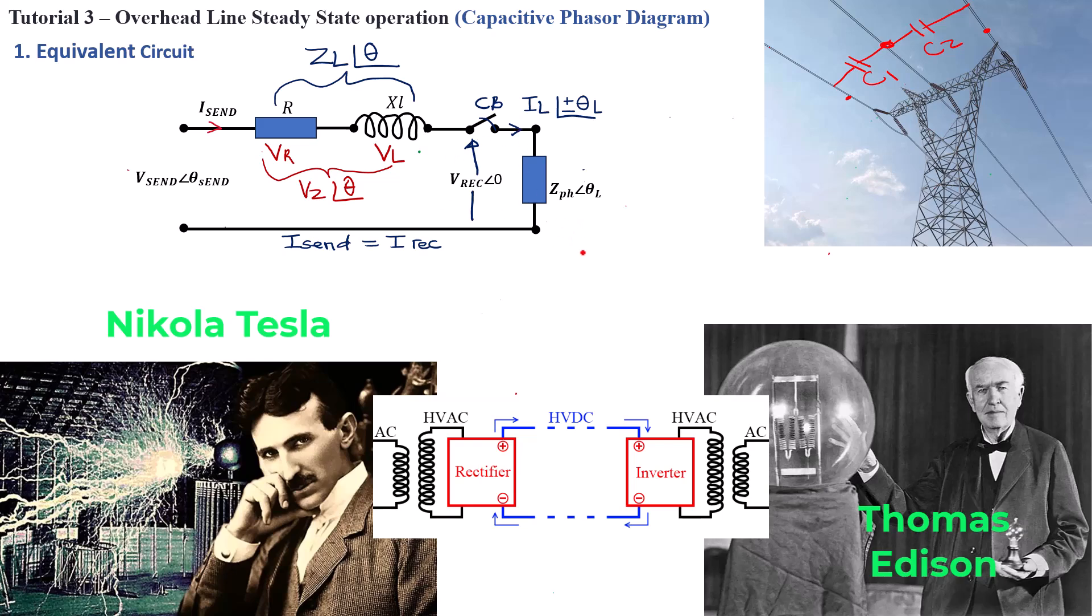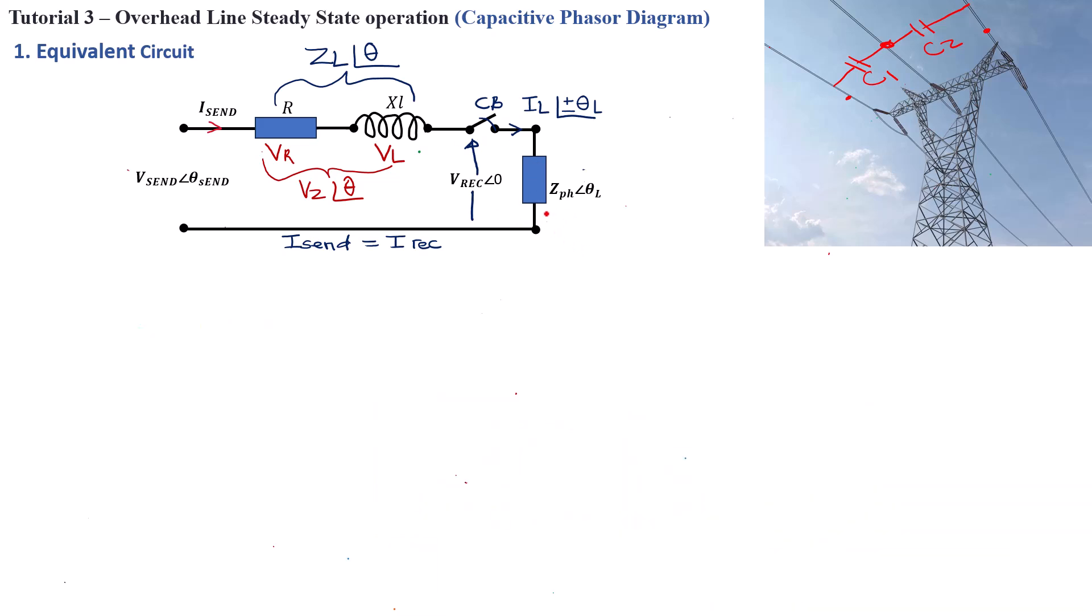But that's a subject for another tutorial. Let's get back to our steady state operation for transmission lines running at 50 or 60 hertz frequency. Because this circuit will also behave differently if you have a voltage source that is running at a higher frequency. That will be very different if you supply a PWM signal at 100 kilohertz or one megahertz or so forth.